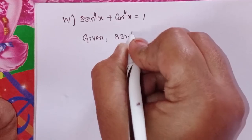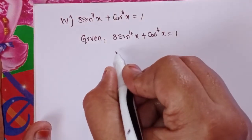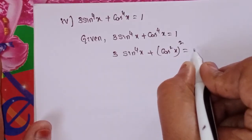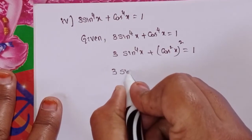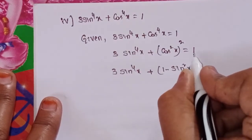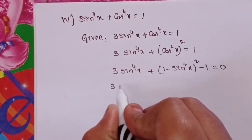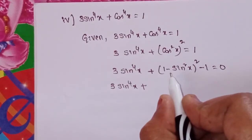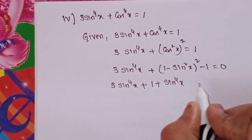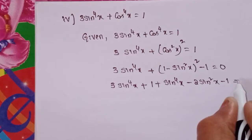Next, fourth problem: given 3 sin to the power 4 x plus cos to the power 4 x equal to 1. We write cos⁴x as (1 minus sin²x)² and expand: 3 sin⁴x plus 1 minus 2 sin²x plus sin⁴x minus 1 equal to 0, applying the formula (a minus b)² = a² minus 2ab plus b².